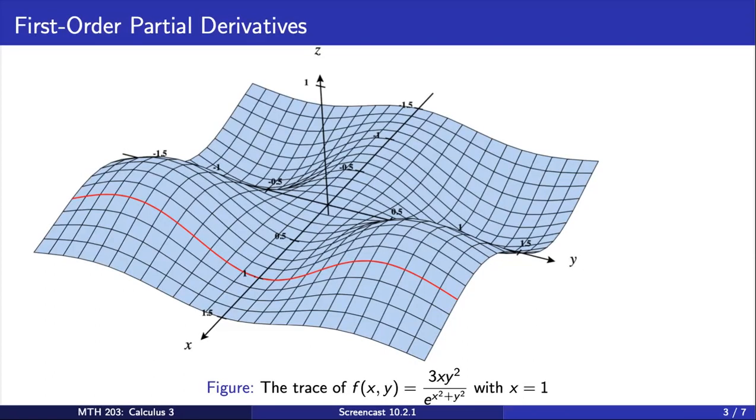Recall in chapter 9 we studied the behavior of a function of two or more variables by considering the traces of a function. A trace helps us understand how the function is changing in a particular direction by holding either x or y constant. Pictured here in red is a trace that holds x constant, and pictured here is a trace that holds y constant.